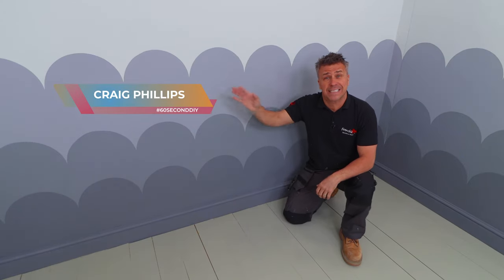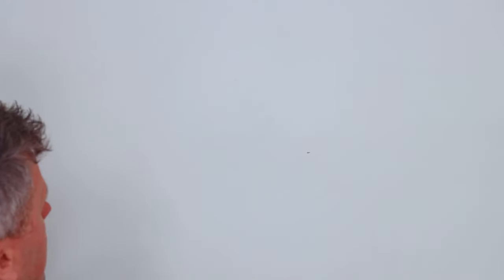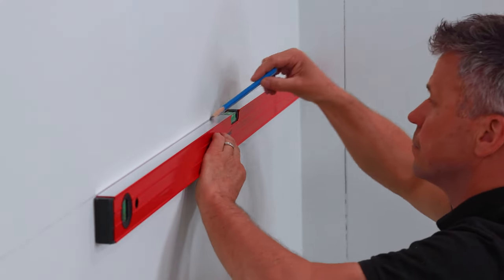I'm going to show you how to paint scallop effects on your walls. Start by measuring the height you want your first scallop line. Draw a straight level line around the room using a spirit level.